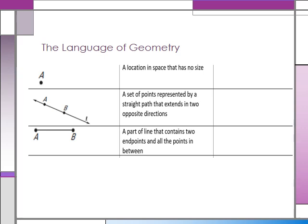We start with a location in space that has no size — that's called a point. We name it just by using a letter, so we name this as point A. You don't need to write the word 'point' down; you can just write the letter A.